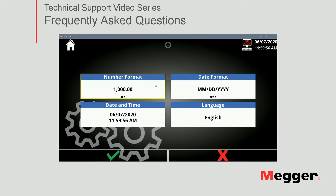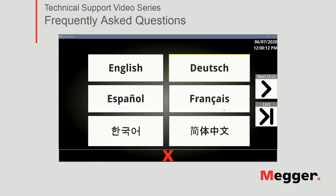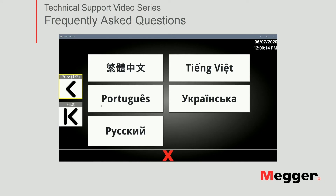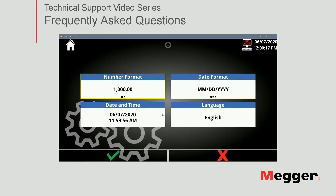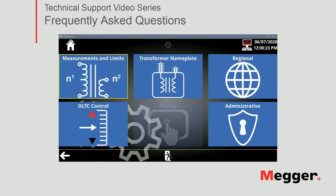Going into the Regional section, you can change the number and date formats, as well as the date and time for your system to match your local configuration. You can also change the language — many different options are available. I'll leave that in English for this video and accept the changes.